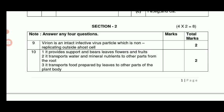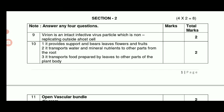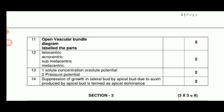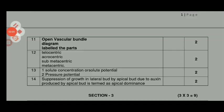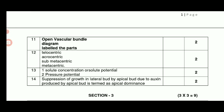Mycorrhizal function is given. You can use 2 marks for 3 points: Open Vascular Bundle. Centromere-based chromosome types: Telocentric, Acrocentric, Submetacentric, Metacentric — 4 marks. Solute Concentration or Solute Potential, or Pressure Potential — 2 marks. Suppression of growth in lateral bud by apical bud due to the auxin produced by the apical bud is termed as Apical Dominance — 2 marks.